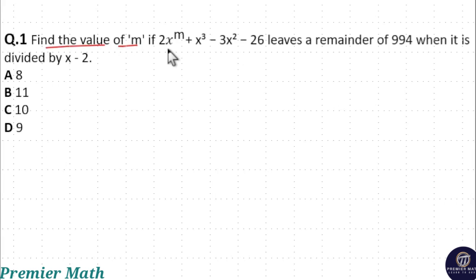Find the value of m if 2x^m + x^3 - 3x^2 - 26 leaves a remainder of 994 when it is divided by x - 2.